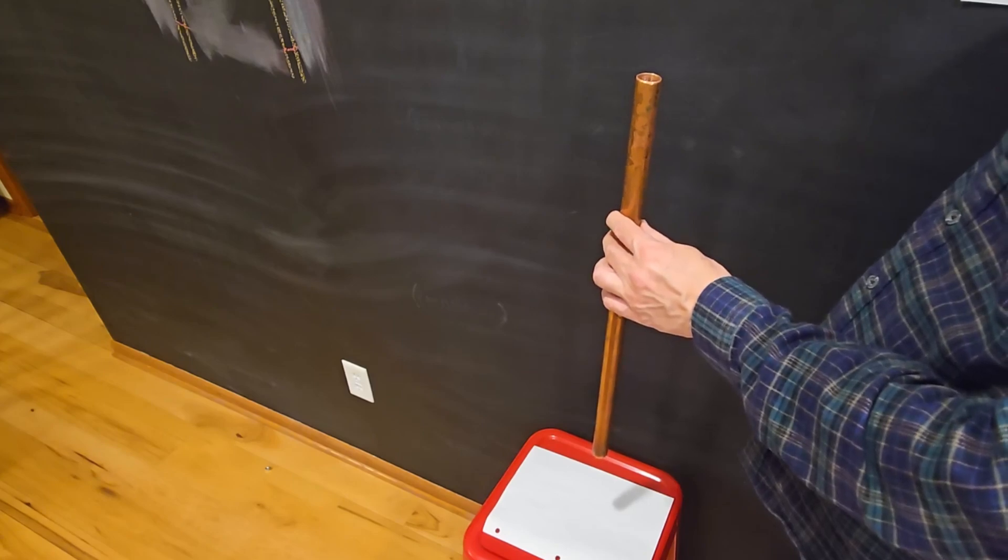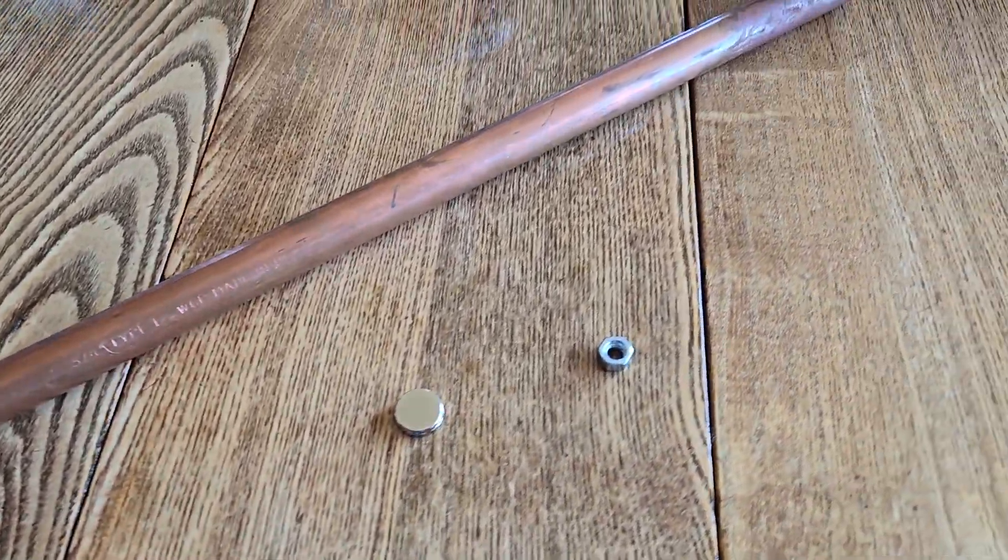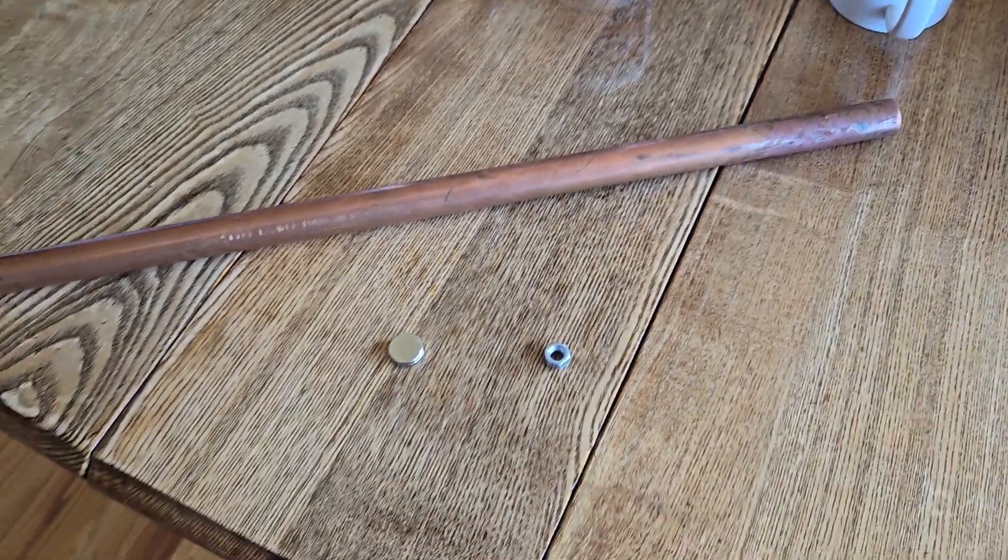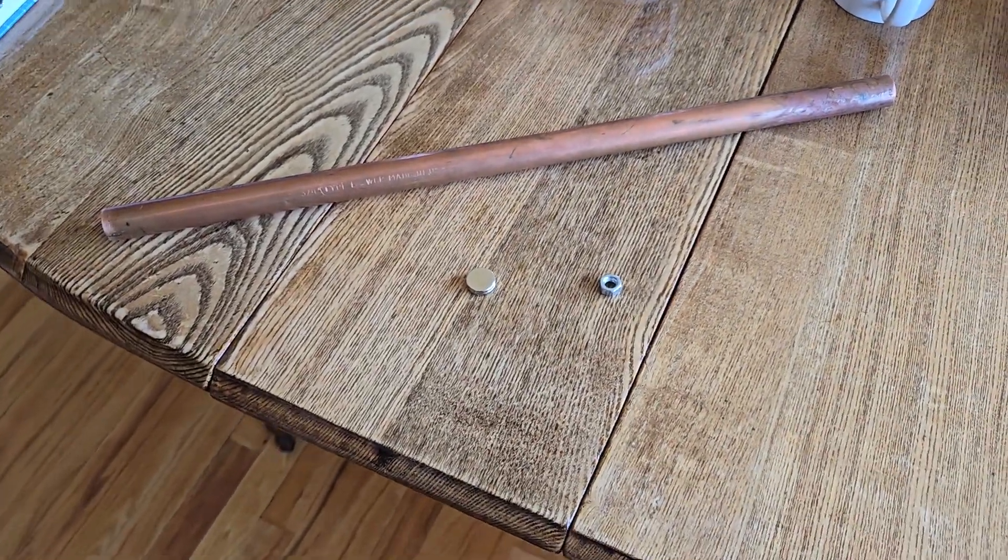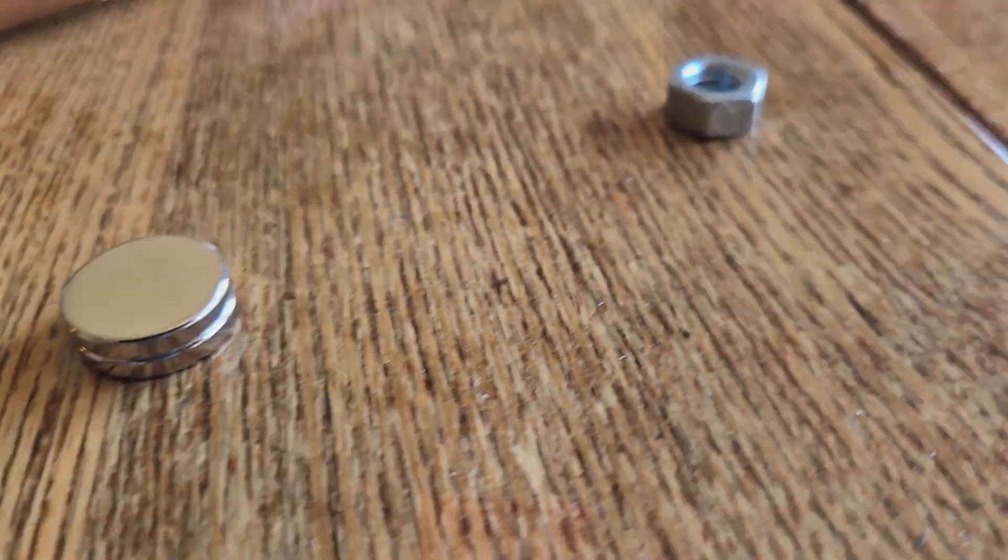All right, so let's get into some of the details, including what you'll need. I'm going to lay this out real simple. You only need three things. If you don't have them in your house right now, you can easily get them at Home Depot. All you need is a copper pipe, a steel nut, and a magnet.